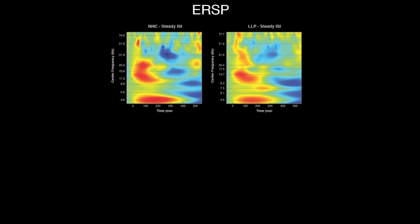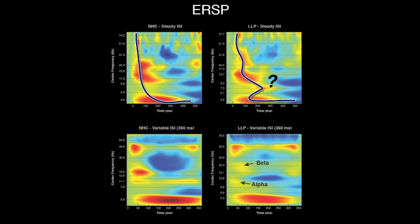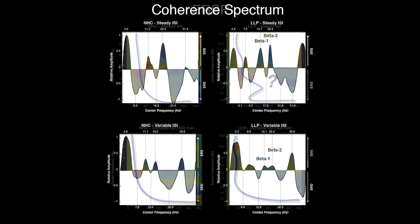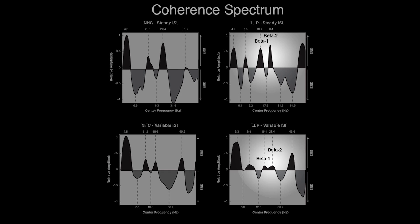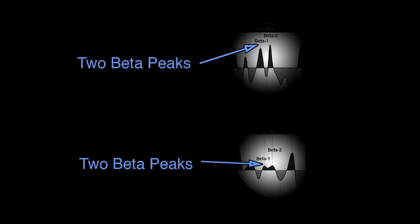We compared time-frequency responses in typically developing children and in children with language learning problems. Those responses showed an atypical spectral-temporal hierarchy in children with learning problems. Further, when the timing of the stimuli were randomized, the spectral power of the beta and alpha activity were significantly diminished in children with learning problems. An analysis of the frequency coherence spectrum shows that children with listening problems had two different beta peaks compared to their normal hearing peers, which may suggest a desynchronization or a decoupling of oscillatory networks in these children.